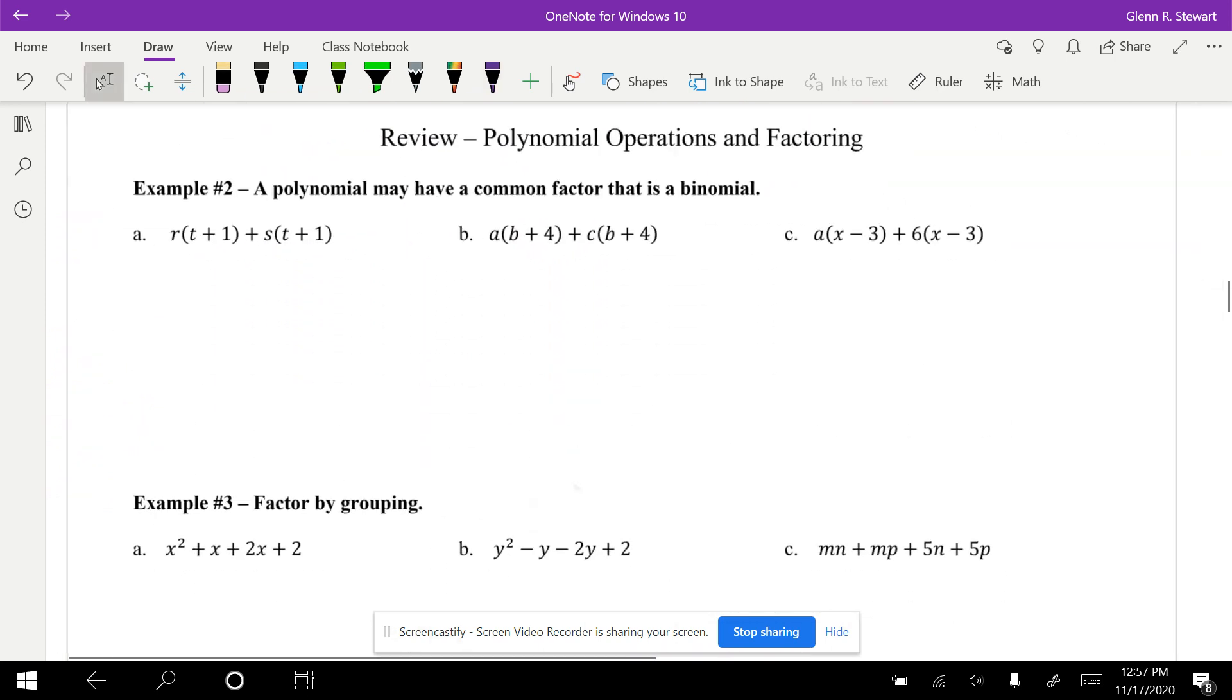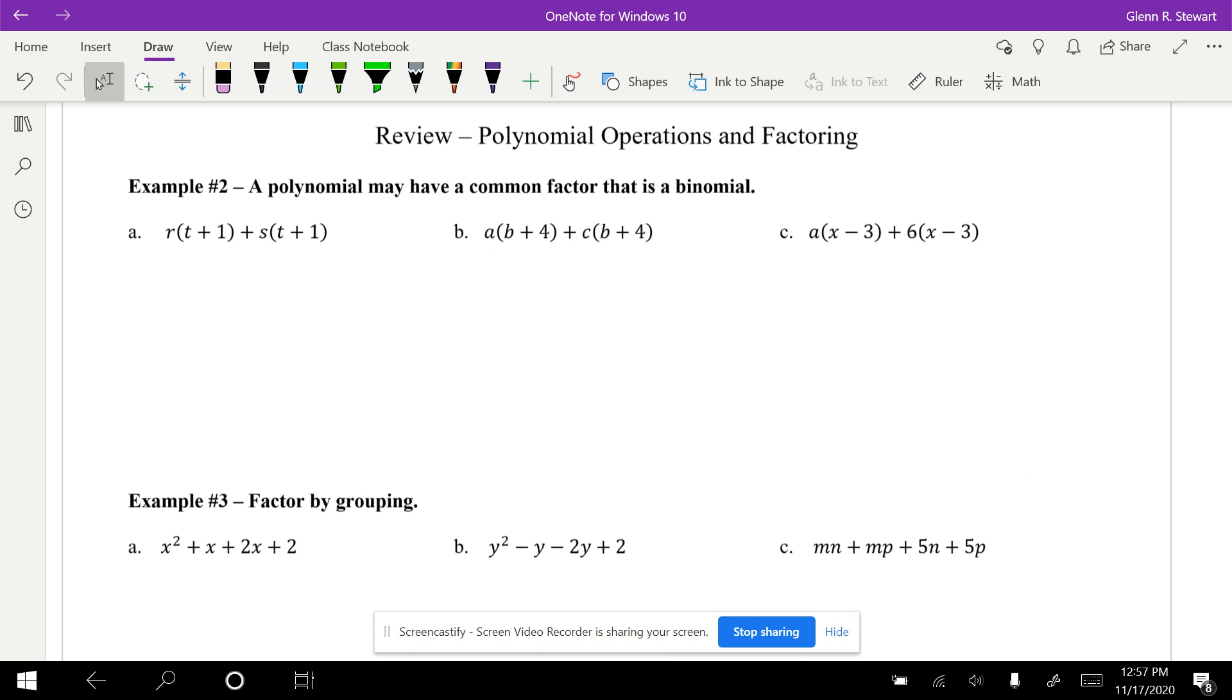There's another example where we actually have something that we could factor out all together where they have the same two numbers inside. Think of it as where we used to have maybe an a and here was an a - now we have two numbers. And because they share the same exact thing, we can actually factor it out to the front with the parenthesis and everything.